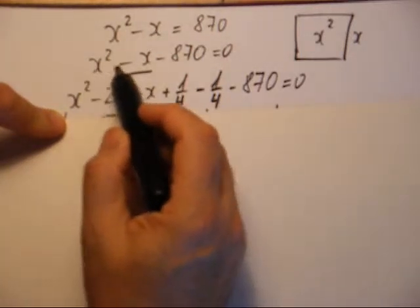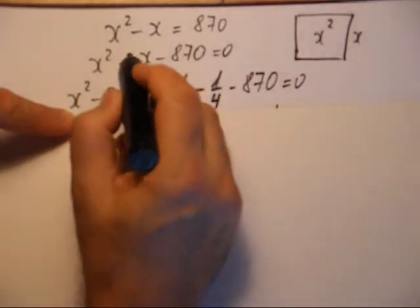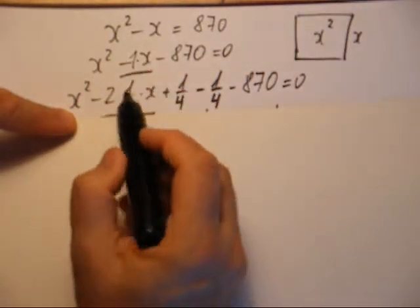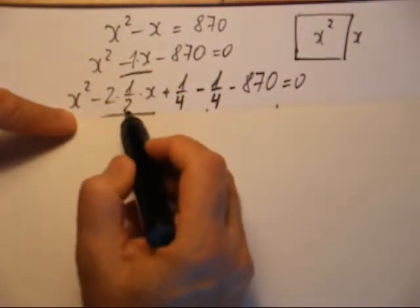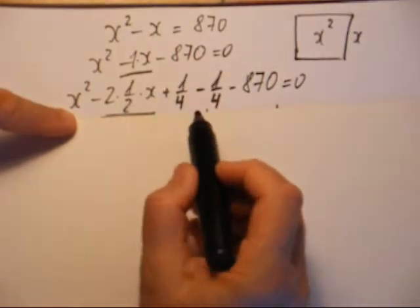Remarquez bien que tout ce qui est là c'est ici. La différence c'est que le 1 qui était coefficient ici ça a été écrit 2 fois 1 demi. Et le carré est apparu, il a disparu. On va aller voir pourquoi.